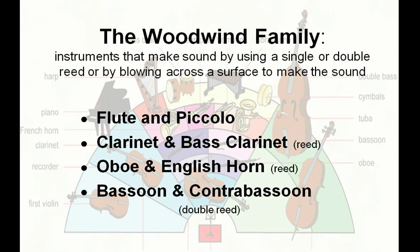The woodwind family are instruments that make sound by using a single or double reed, or by blowing across a surface to make the sound. They include the flute and piccolo, the clarinet and bass clarinet, the oboe and the English horn, and the bassoon and the contrabassoon.